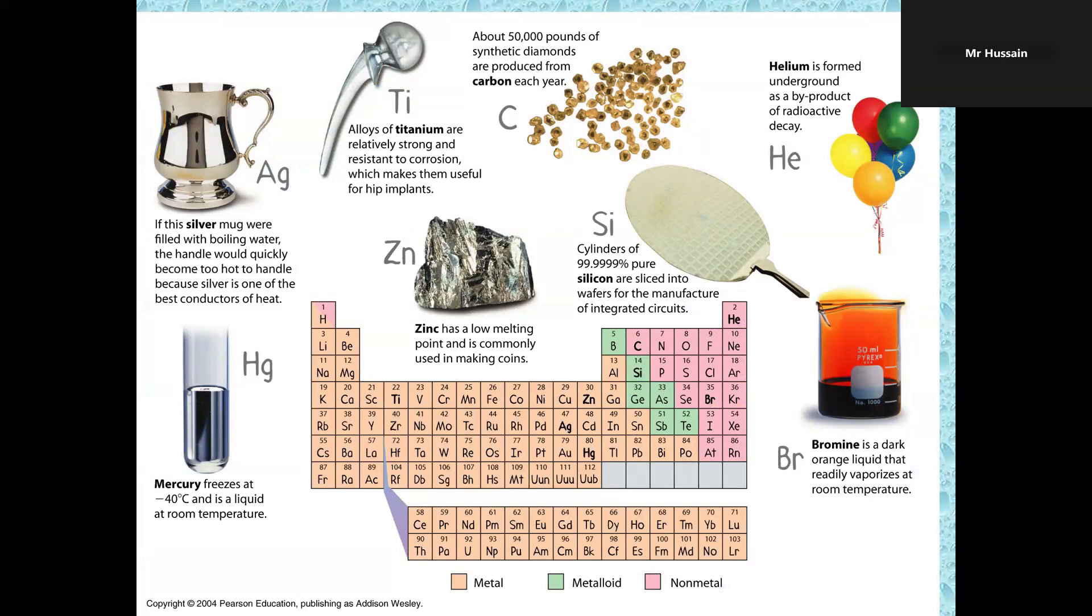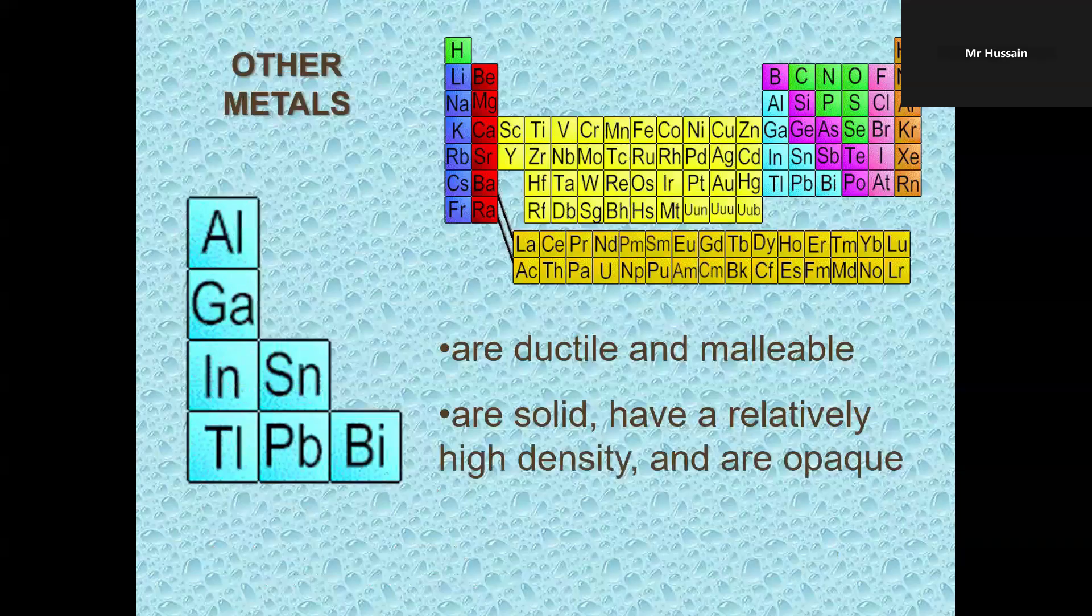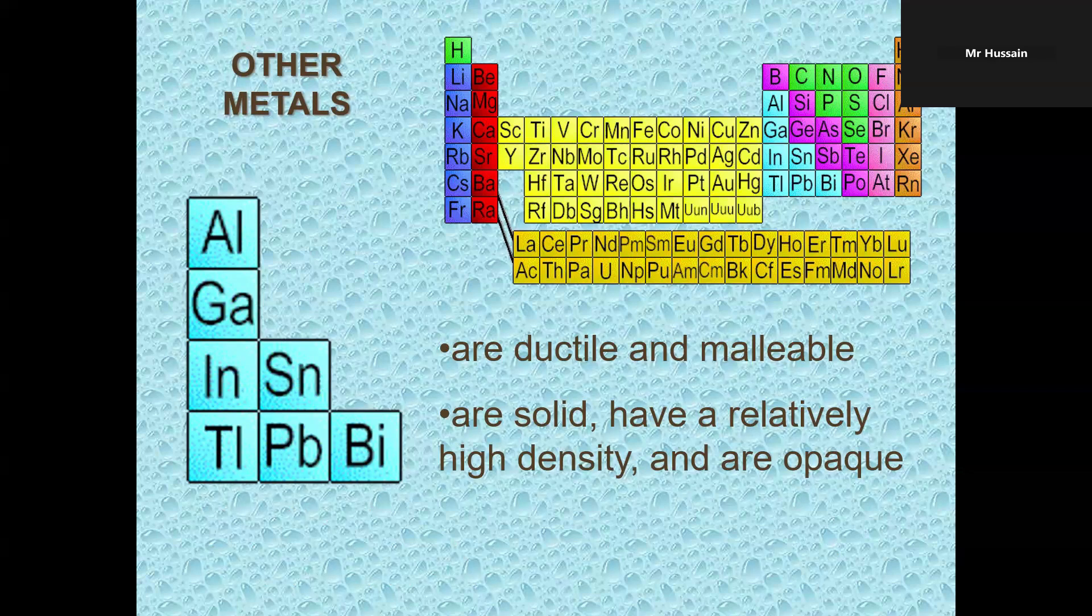You can look at a few examples. Remember one thing: all metals are solid except mercury, Hg. It is liquid at room temperature. Other metals in groups 13 and 14 are also ductile, they are malleable, they are solid, they have high density, and they are opaque.